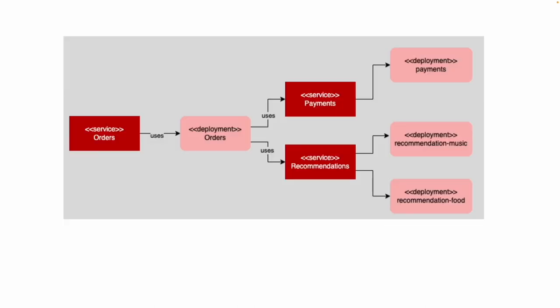The demonstration application is fairly simple. It's composed of three microservices. The orders microservice talks to a Kubernetes deployment named orders, which in turn makes payments. When a payment is made, part of the response is to get a recommendation along with the order return. The payment service uses a payments deployment and the recommendation service uses two deployments: recommendations music and recommendations food.